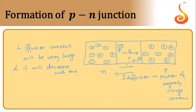The electron is moving from p to n-type, in this direction. The direction of current will be opposite to the direction of motion of electrons, and this is known as drift current. In this case, electrons were minority charge carriers because they were present in less amount in p-type. So drift current is due to the motion of minority charge carriers.